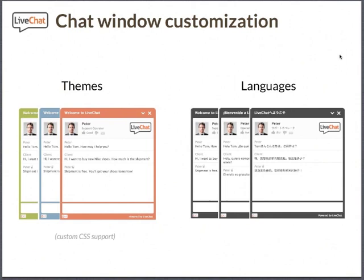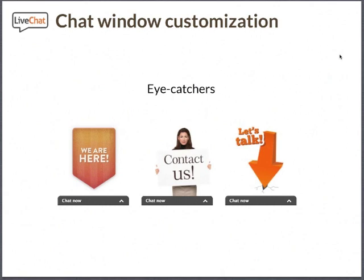The chat window itself can be tailored to the style and design of your own website. We provide a set of colorful themes for the live chat window and also a set of translations if you're international. We also support custom CSS, so there is absolutely no problem with styling the chat window the way you like it — you can change the borders, frames, logo, and remove or add additional features. Eye-catchers are another important part of the chat window. They allow your visitor to notice it and click on it, and they can be customized with a selection from our gallery or a set of your own designs.